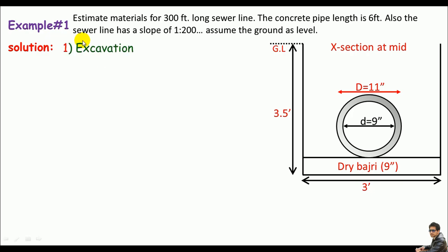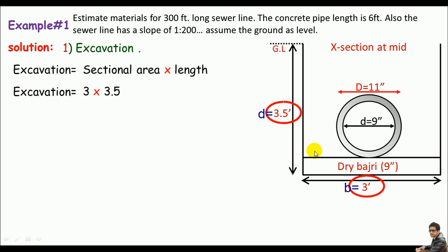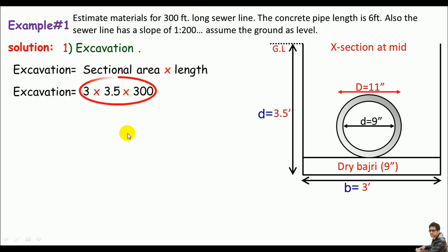For excavation, the formula is: cross-sectional area of the trench times the length. The cross-sectional area is breadth times depth, which is 3 × 3.5, and the length is 300 feet. Doing the math gives us an excavation volume of 3150 CFT.